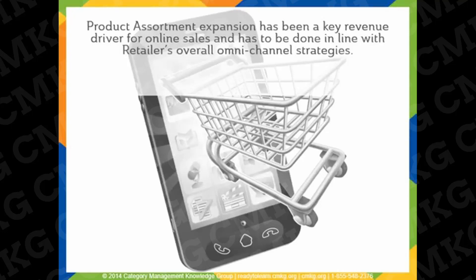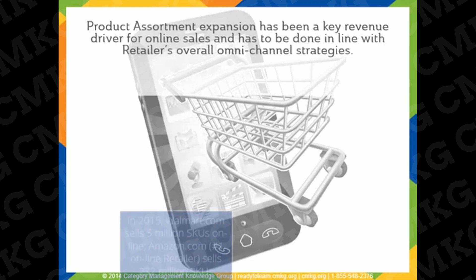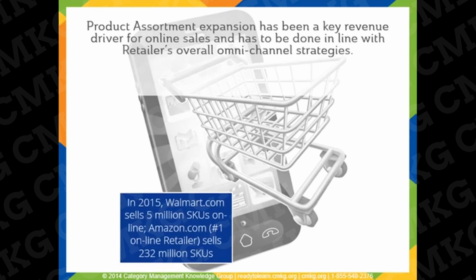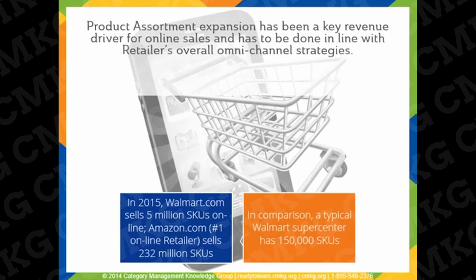Retailers also need to focus on their online product assortment strategy. They have been increasing their online product assortment to capitalize on the growth of e-commerce and to catch up with online retailers like Amazon. For example, in 2015, Walmart was selling more than 5 million SKUs online, but this compares to 232 million SKUs at Amazon, and to 150,000 SKUs that Walmart sells in its average supercenter. In net, product assortment strategy online has to be done in line with the retailer's overall strategy. Retailers need to develop an omni-channel assortment strategy that will allow them to win in both physical and digital retail.